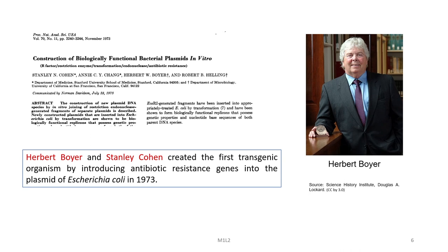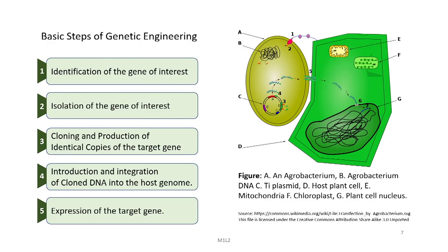This is the paper published in 1973 by Cohen and his colleagues in PNAS, who created the first transgenic organism by introducing antibiotic resistant genes into the plasmid of E. coli in 1973.